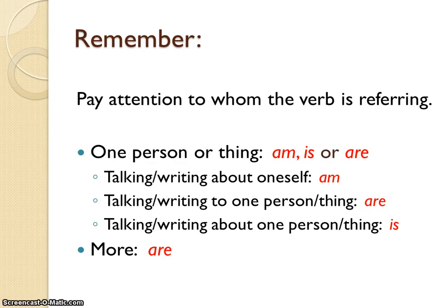So if you are talking or writing about yourself, you use I am. If you are talking or writing to one person or thing, you use you are. If you are talking or writing about one person or thing, you use he, she, or it is. And if you are talking or writing about more, you always use are.